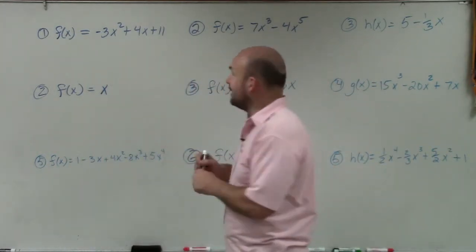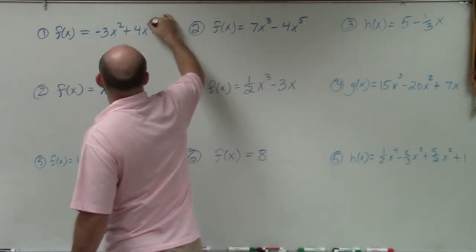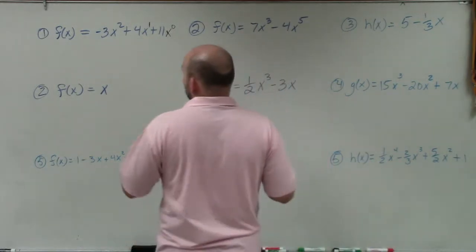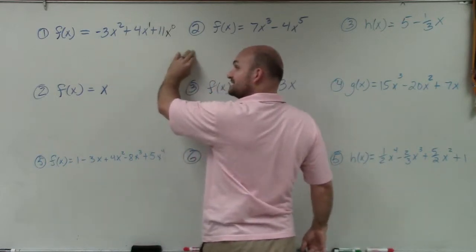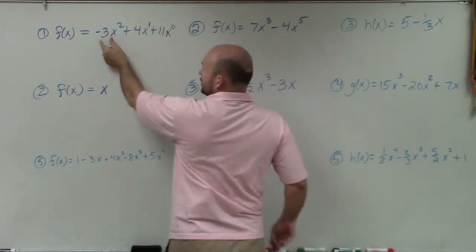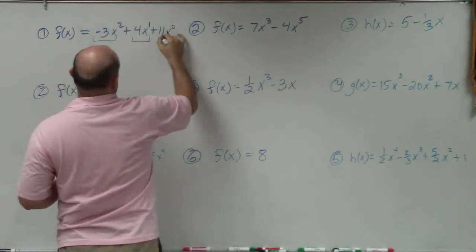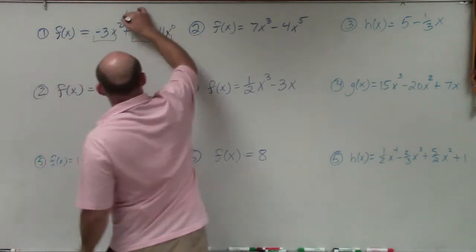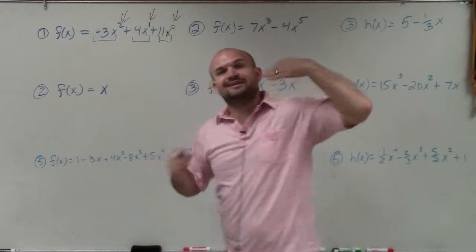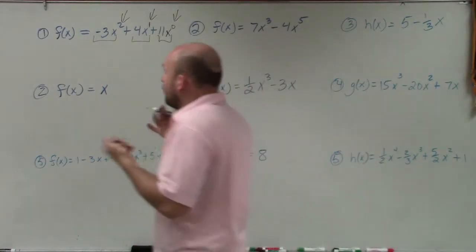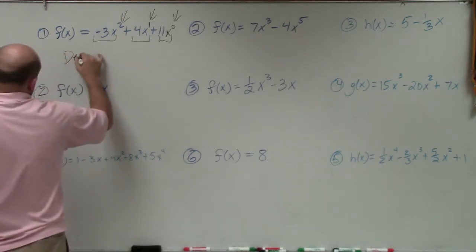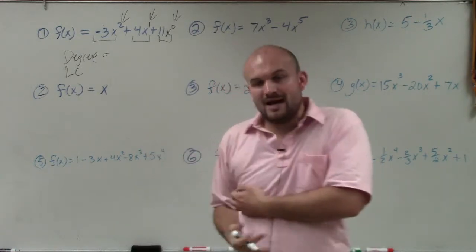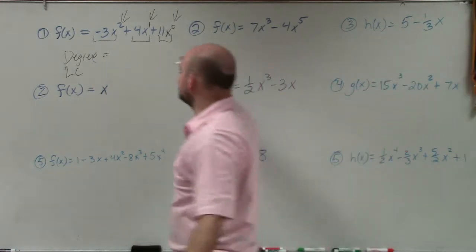The main important thing is you don't have to write x to the zero power, but I do that just to show you that x to the zero power is just equal to 1. This example here is a polynomial that's in descending power form, where you have three terms. The first term has the largest power, which is 2. So the powers are 2, 1, and 0 — you can see they're in descending order. We're looking for the degree and the leading coefficient. The degree is going to be the largest power, so if you rewrite it with the largest power first, it's pretty easy — it's 2.